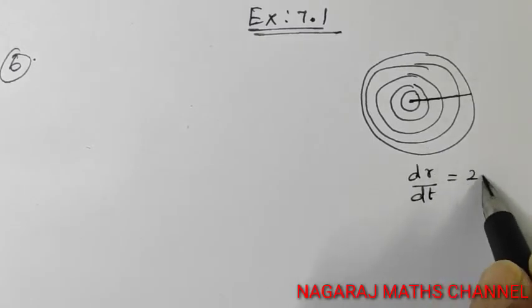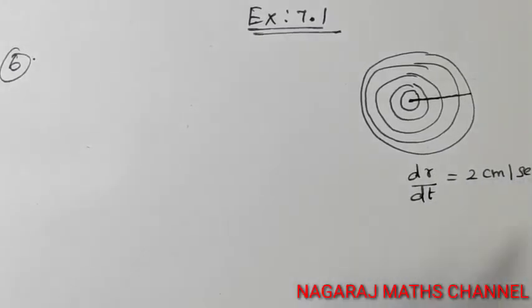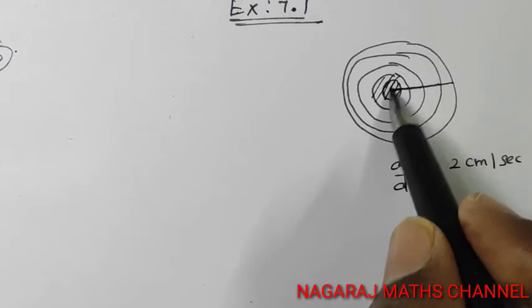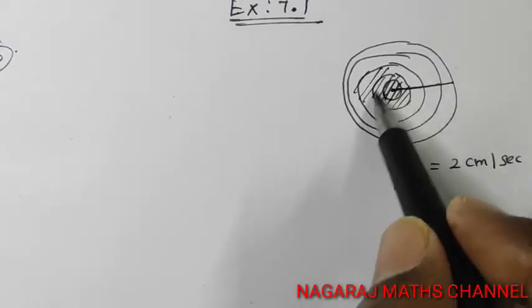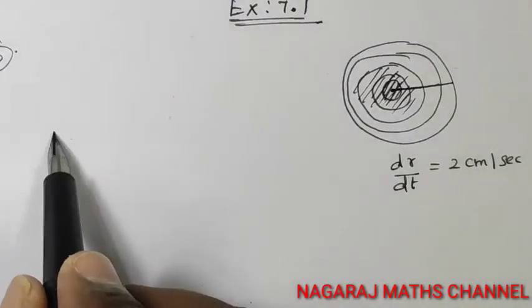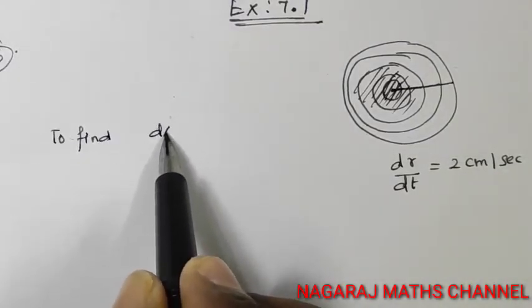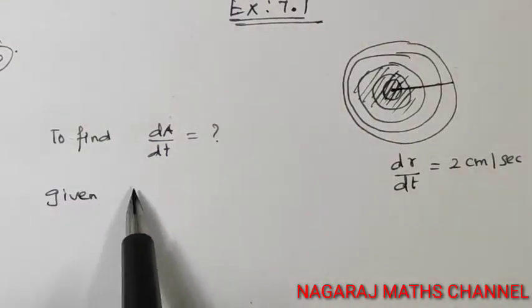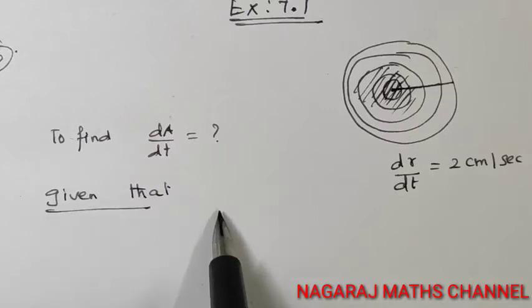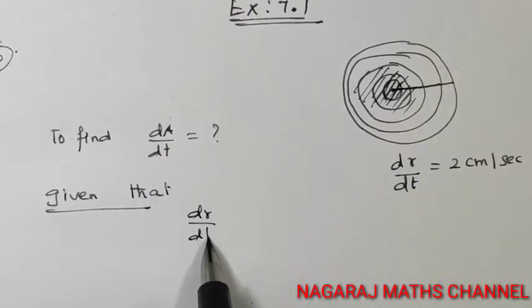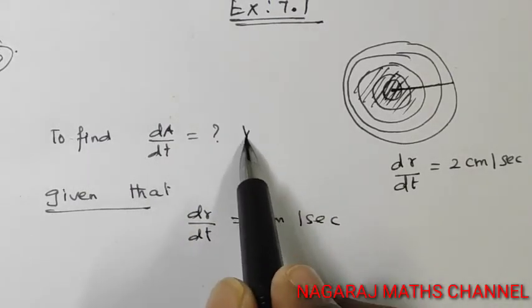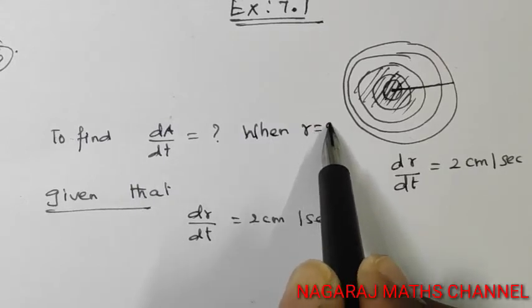Given: dr by dt is equal to 2 cm per second. This means the radius is increasing at a rate of 2 cm per second. When the radius is 5 cm, we need to find the rate of change of area.